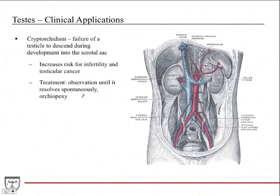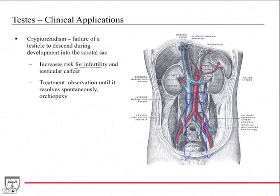A clinical application is cryptorchidism — a failure of the testicle to descend during development into the scrotal sac. Remember, the testicles begin in the abdomen and descend retroperitoneally to their final resting place within the scrotal sac. In cryptorchidism, they get caught somewhere along this track — either in the abdomen or the pelvis — and don't make it down. This can be bilateral or unilateral. The problem is it increases the risk for infertility, because the testicle needs to be at an ideal temperature in the scrotum for proper spermatogenesis.